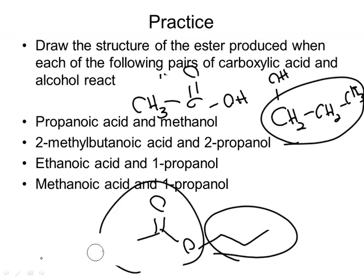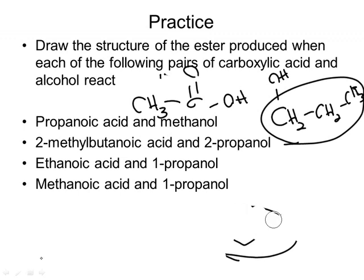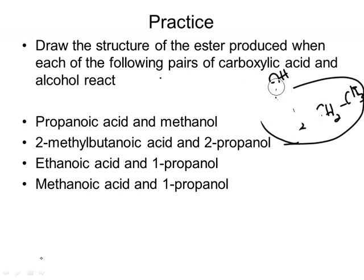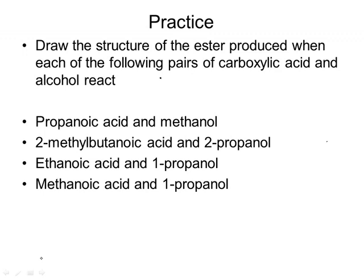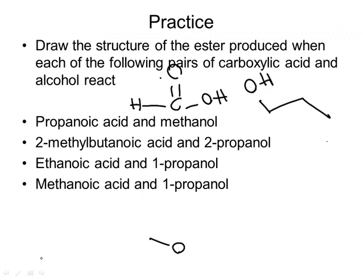And finally, methanoic acid and 1-propanol. Methanoic acid is just CHOH with an H sticking off, plus 1-propanol, which we already drew. So we just get the ester product. And that is esterification reactions.